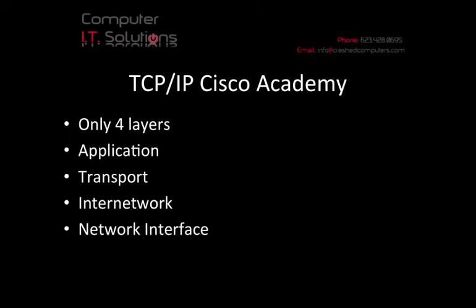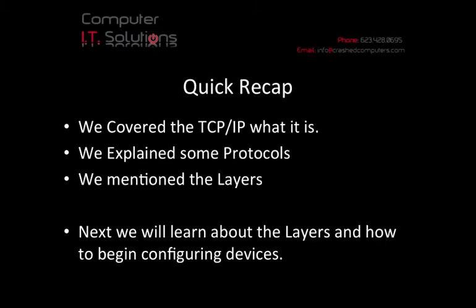On the Cisco Academy side, they've taken those OSI layers and consolidated them into four layers: the application layer, the transport layer, the internet network layer, and the network interface layer. We'll talk about all these layers and the differences between the two models in further courses. So just a quick recap — TCP/IP is a Transmission Control Protocol, and it is a protocol suite, which is the umbrella containing all the other protocols.